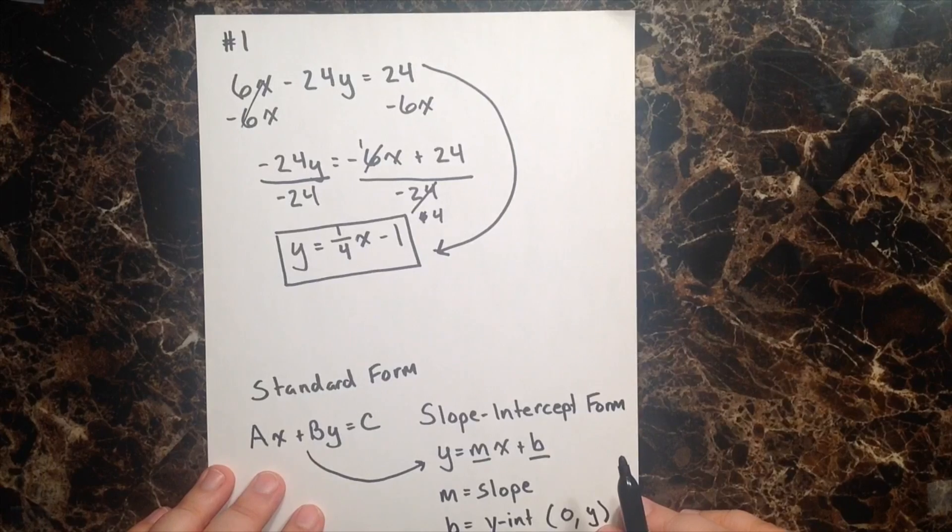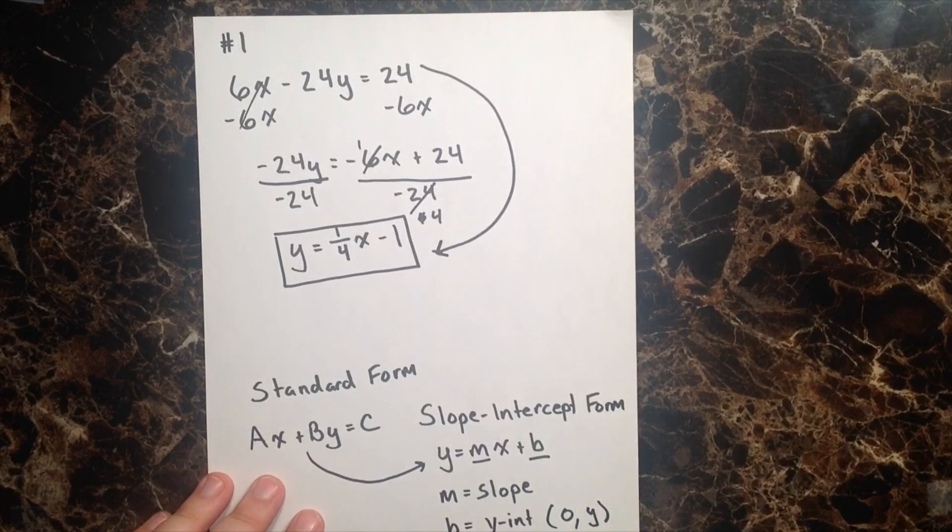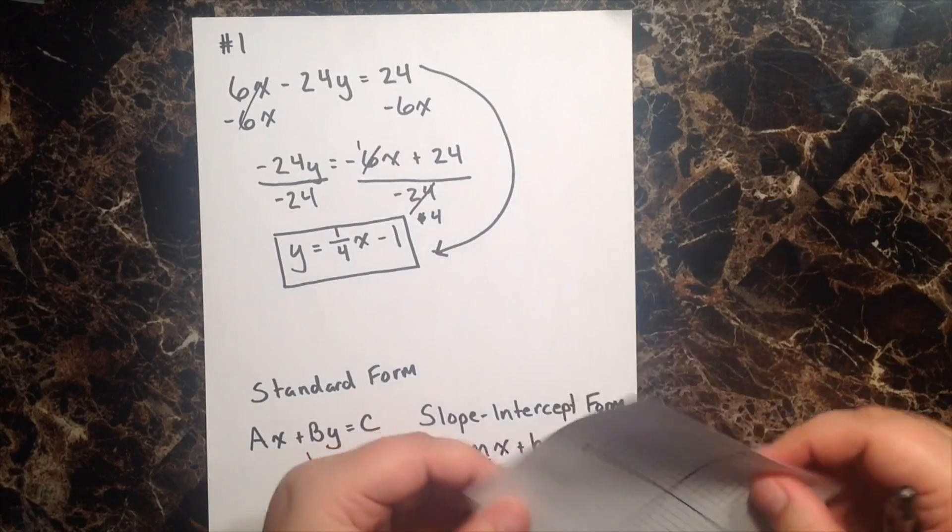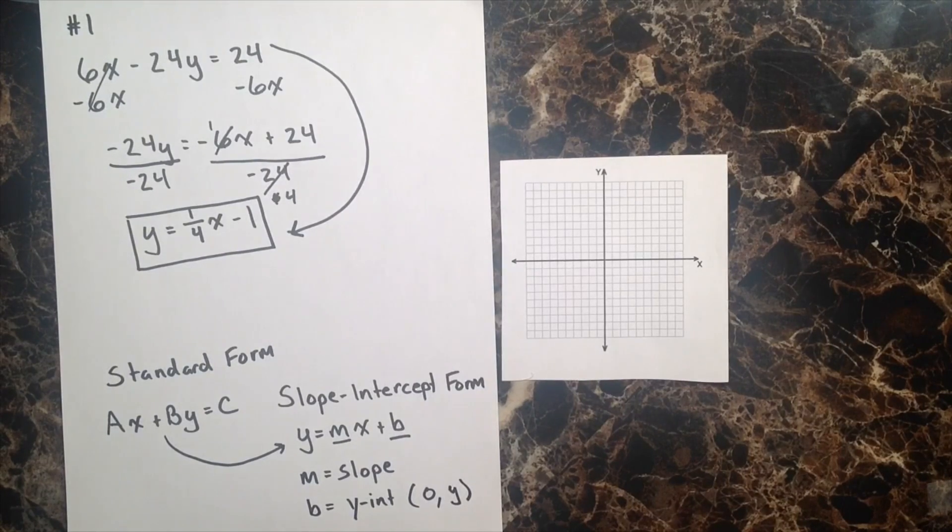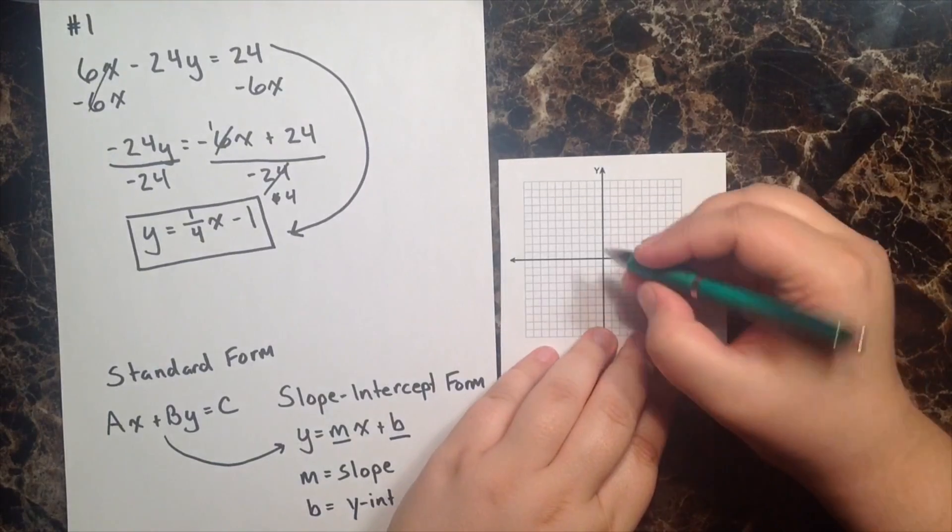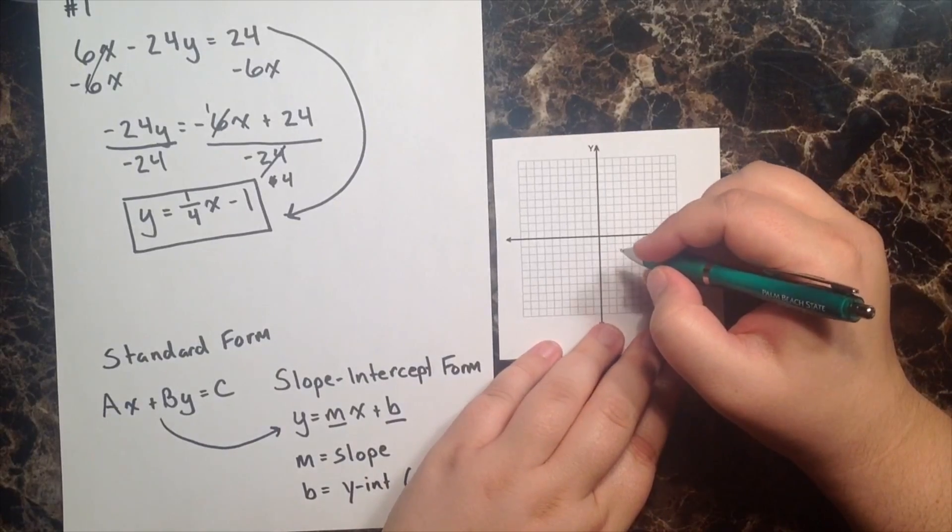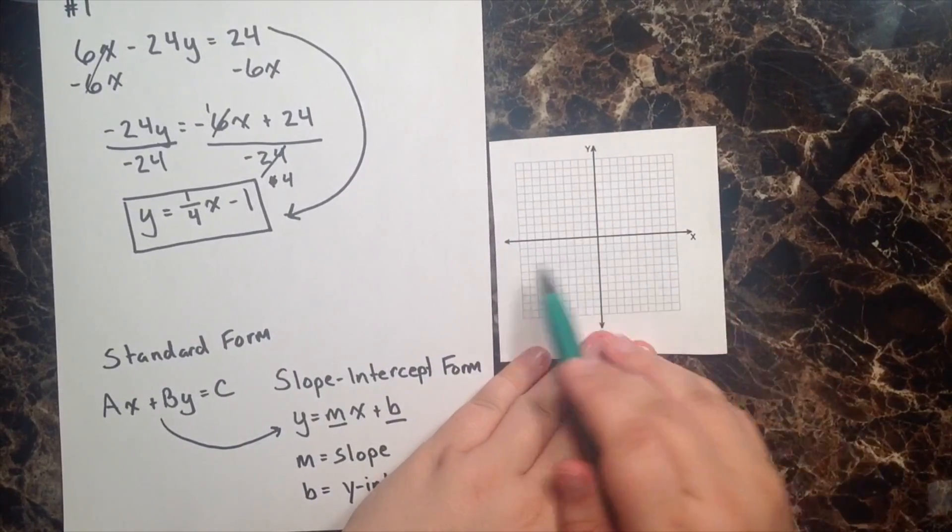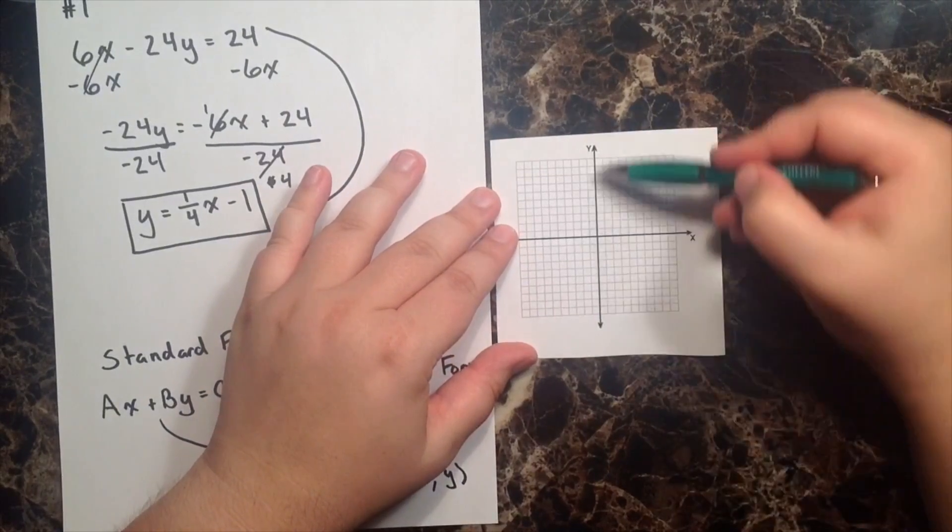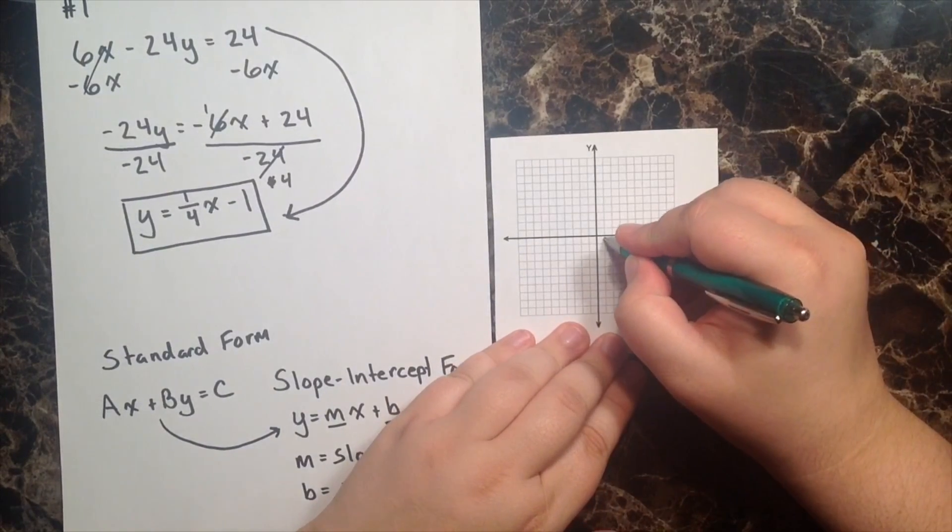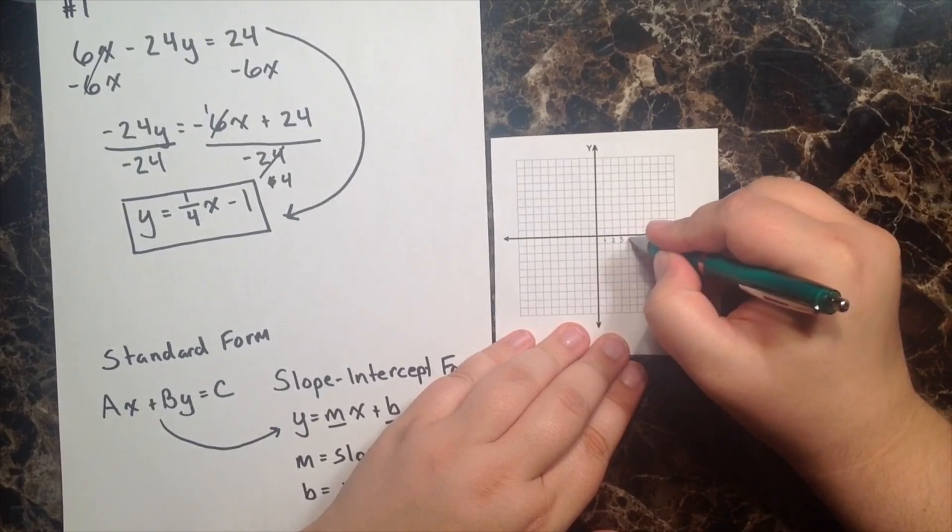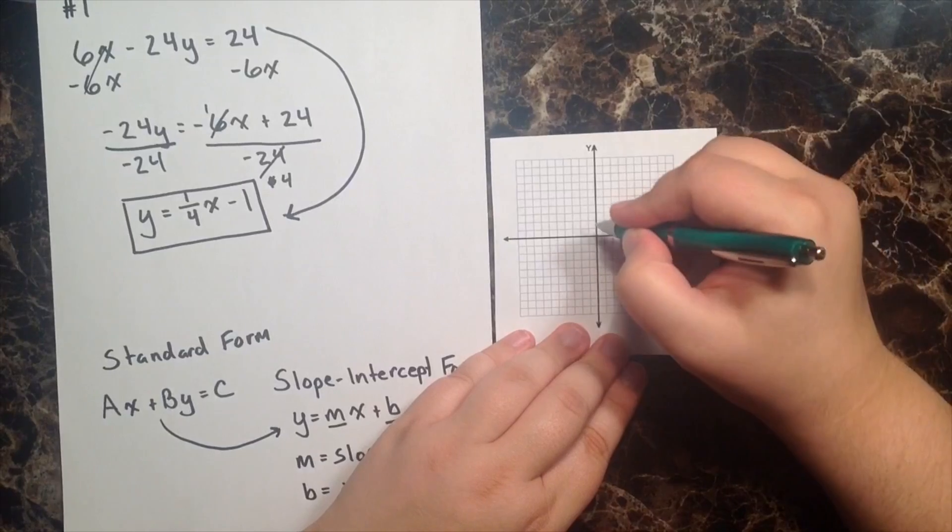This, of course, is the form we want it to be in so that we can easily graph. So let's go ahead and do that part now. So I've got myself just a basic rectangular coordinate plane here. And we're going to go ahead and graph this equation. I'm going to go ahead and switch writing utensils so that it makes it a little easier for us to write. So I have my x-axis running horizontally. I have my y-axis running up and down vertically.